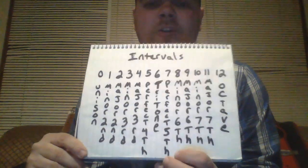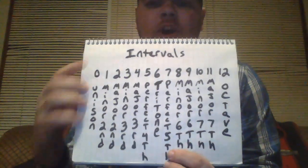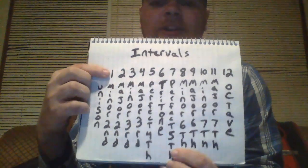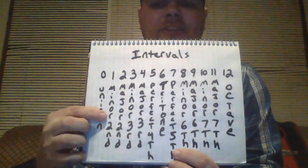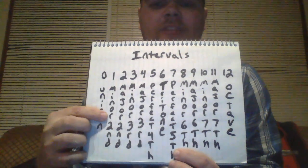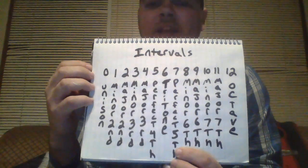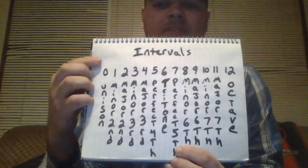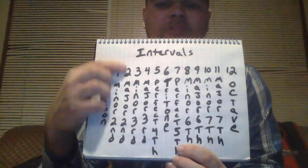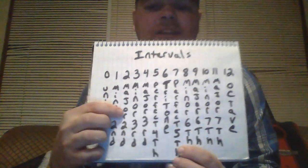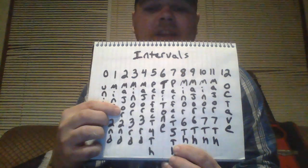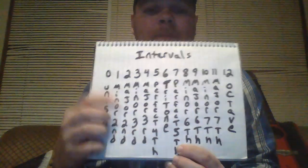If you play any note and the note right next to it, it's called a minor second interval. If you play any note and the note two notes away from it, it's called a major second interval.